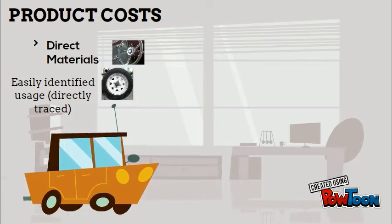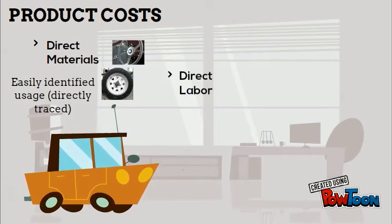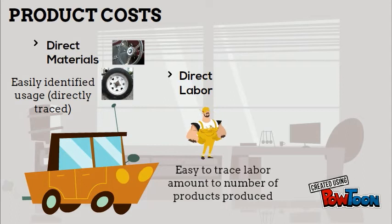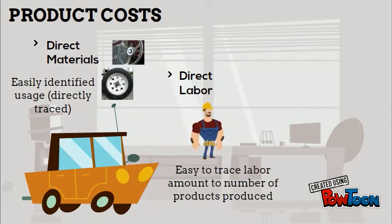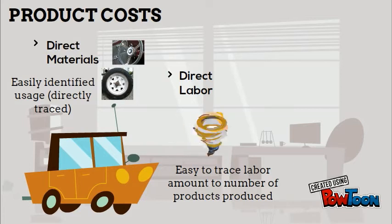Now, aside from those materials, we will also need someone to put those items together. Our direct labor is any labor associated with creating our product that can be easily traced to the final product. So again, we know exactly how many hours of labor it takes to manufacture each product.